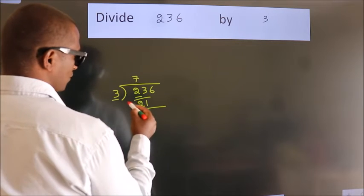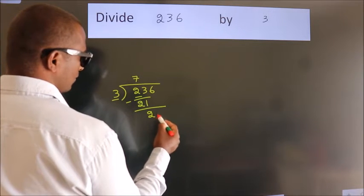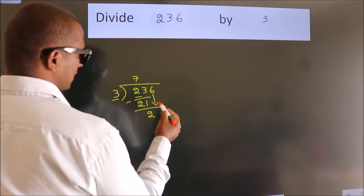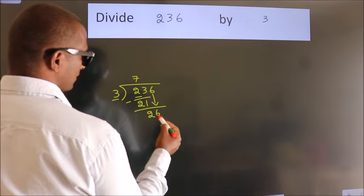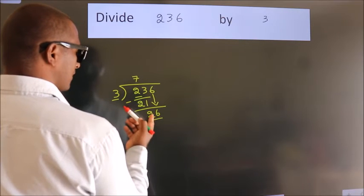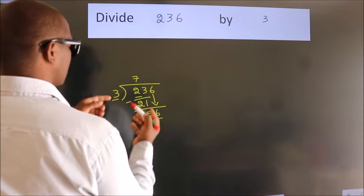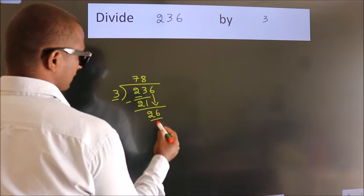Now we should subtract. We get 2. After this, bring down the beside number, so 6 down. So 26. A number close to 26 in the 3 table is 3 times 8 equals 24.